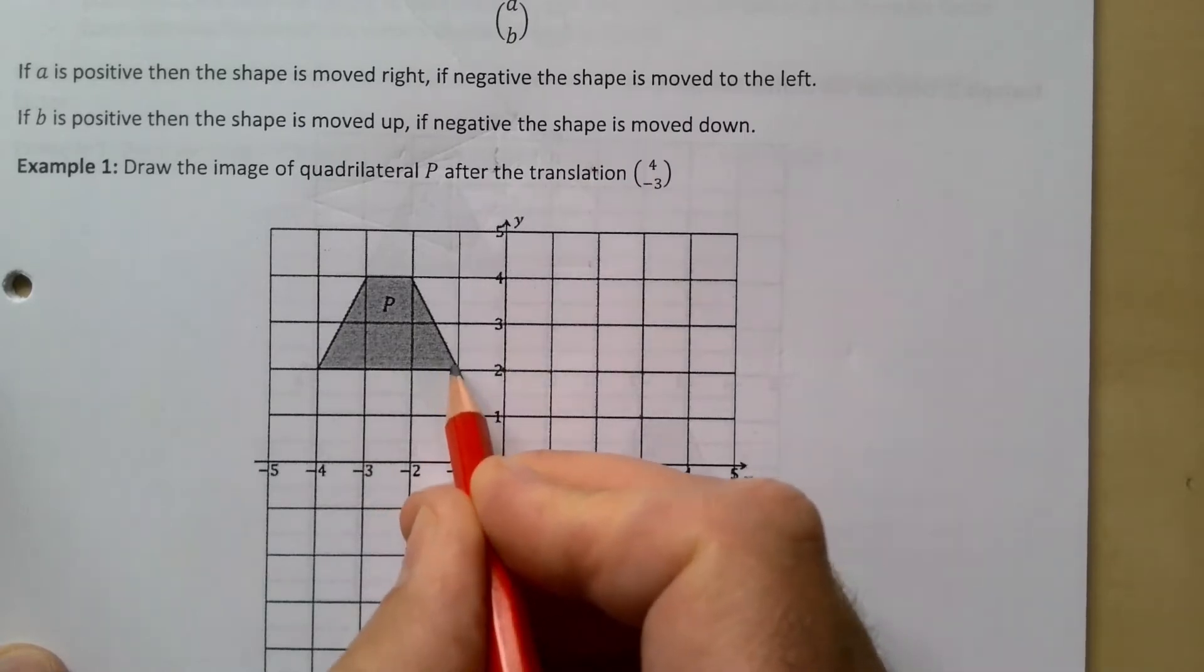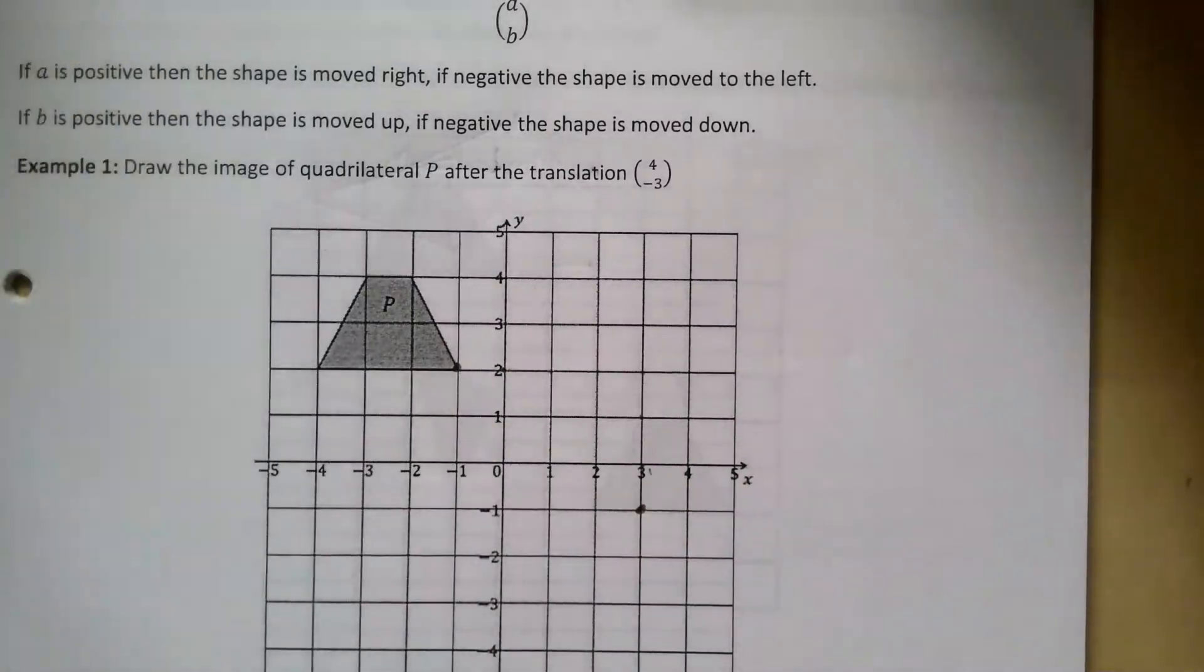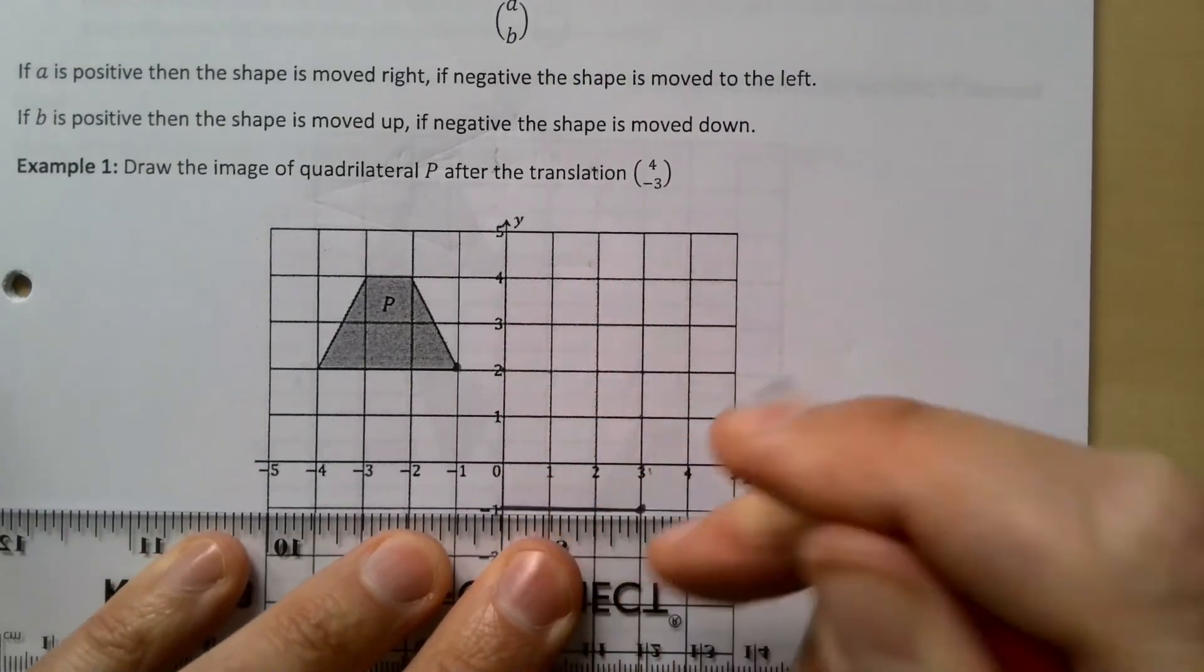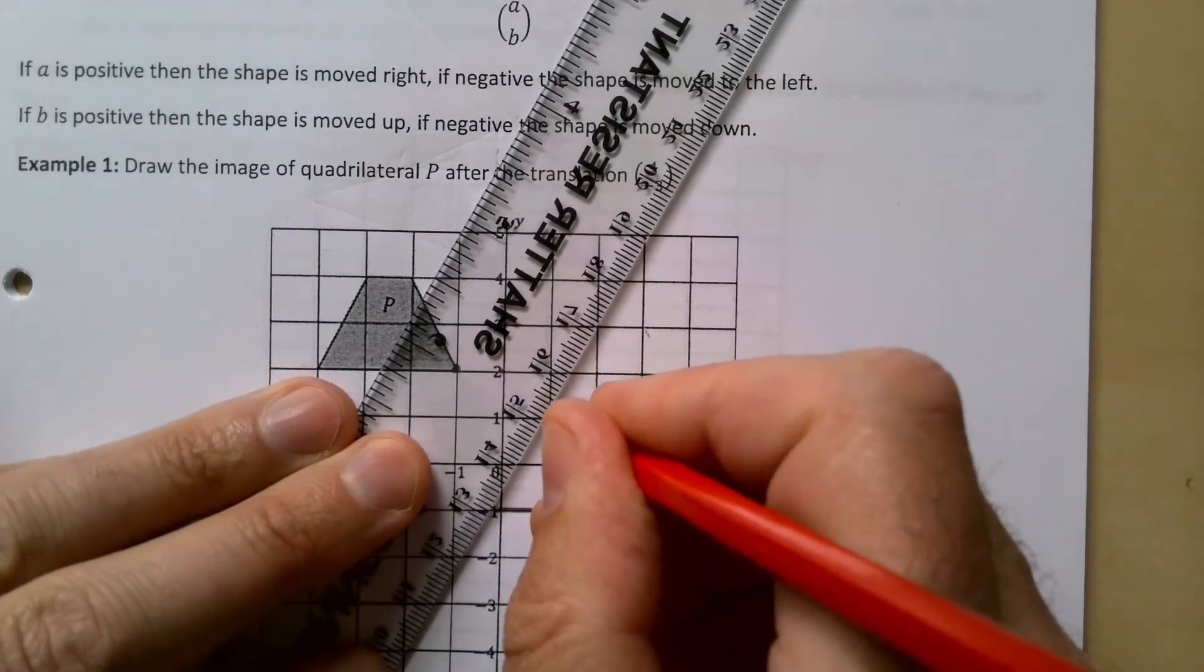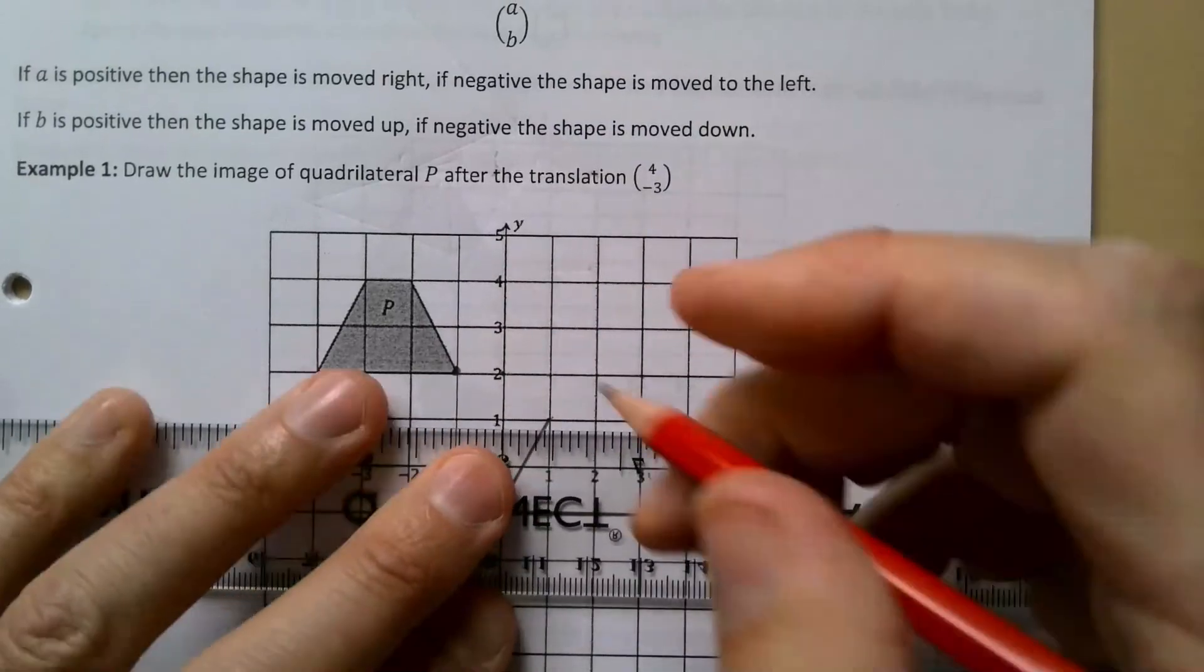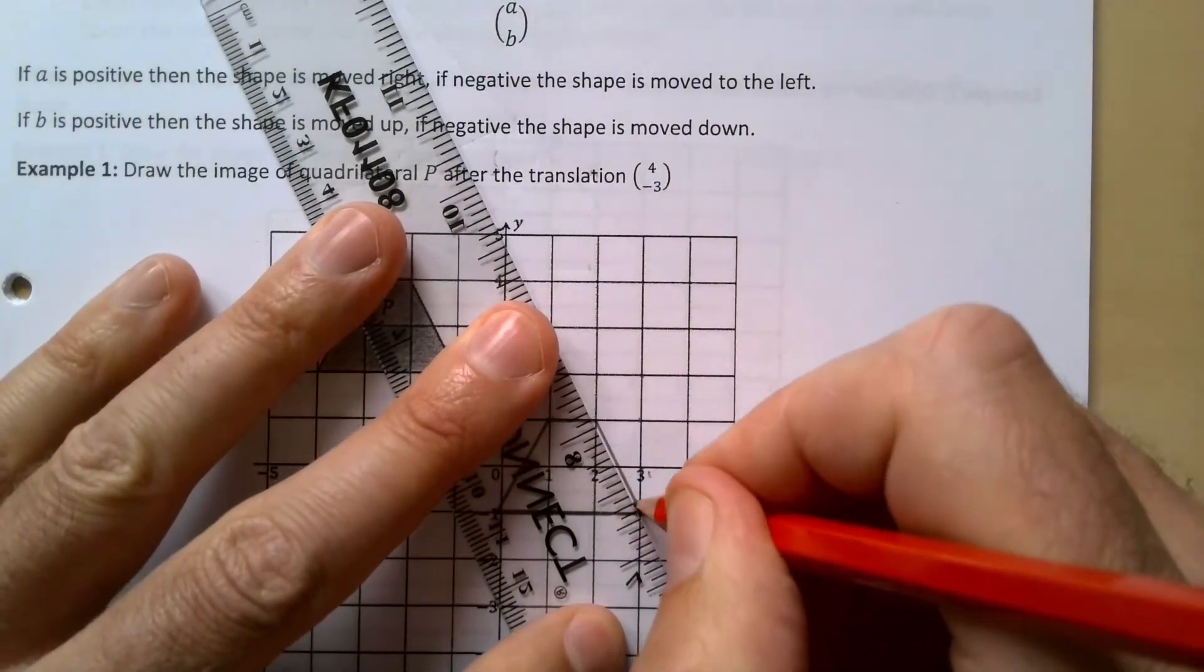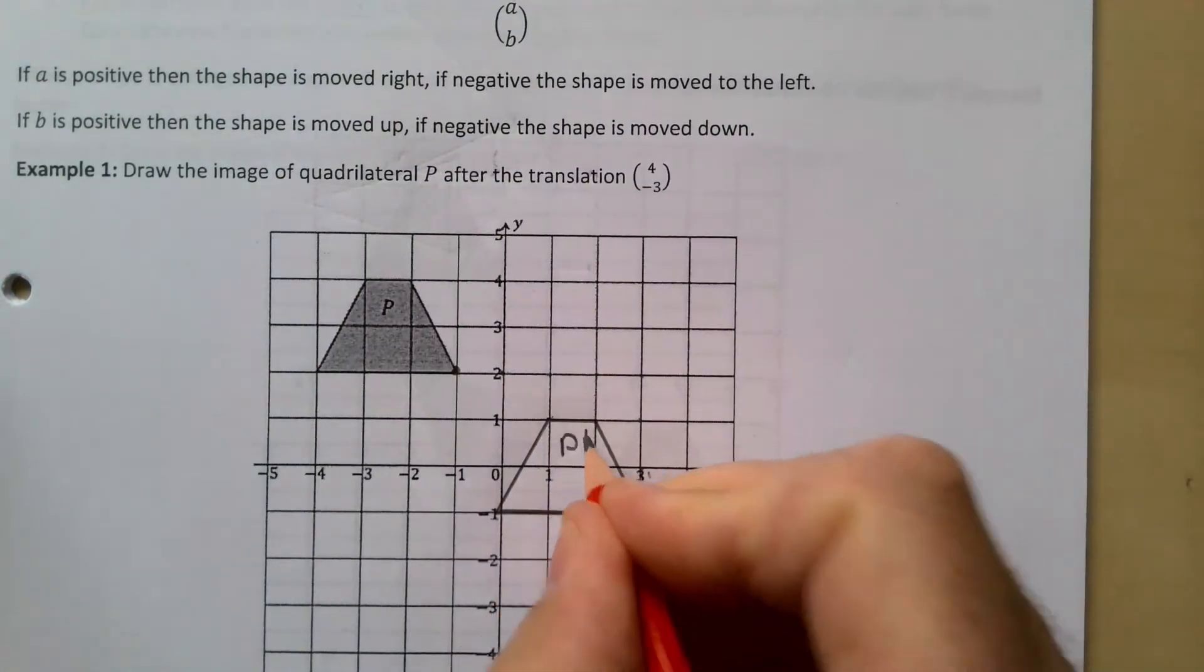And then my diagonal goes up like this, sorry not a diagonal but you know what I mean. And there's my shape moved across four and down three. I'm going to call that then P dash.